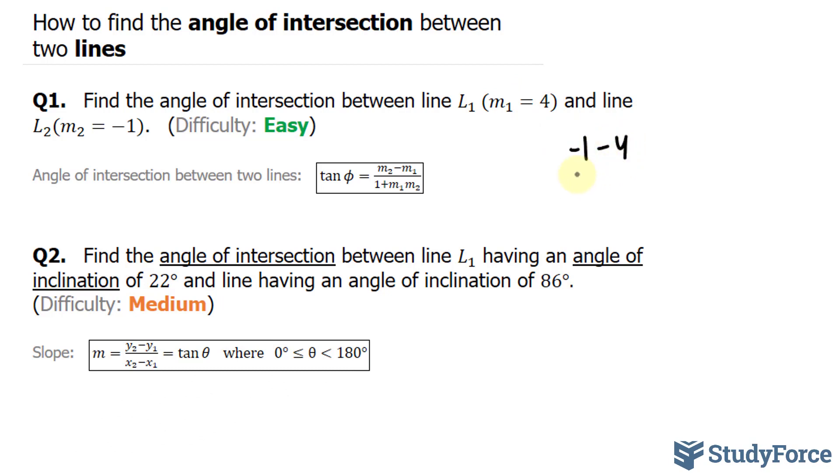So negative one minus four, and the denominator is defined as one plus the product of m1 times m2. m1 is four, and m2 is negative one, and remember, this is equal to tangent phi.